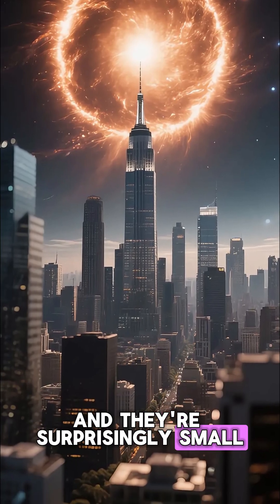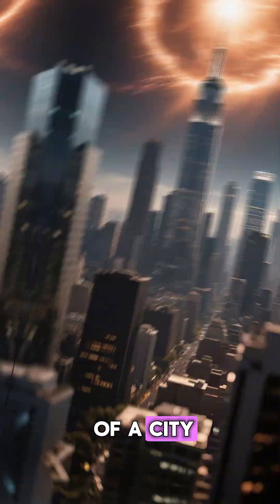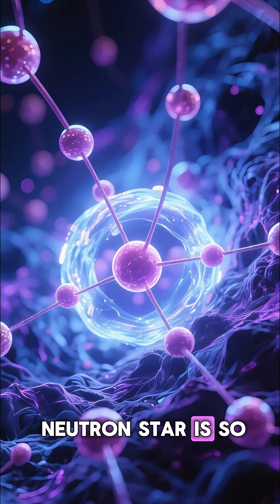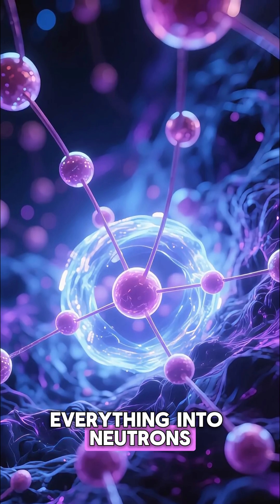And they're surprisingly small, typically only about 10 to 15 kilometers across, roughly the size of a city. The gravity on a neutron star is so intense it crushes protons and electrons together, turning almost everything into neutrons.